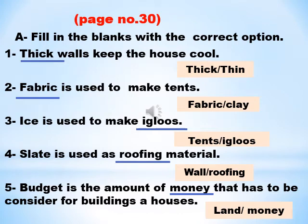Now move on to page number 30. Fill in the blanks with the correct option. Dear students, read the blank carefully and tick the correct answer. Thick walls keep the house cool. Fabric is used to make tents. Ice is used to make igloos. Slate is used as roofing material. Budget is the amount of money that has to be considered for building a house.